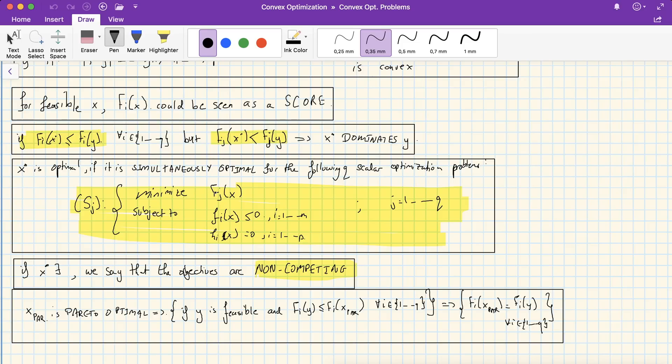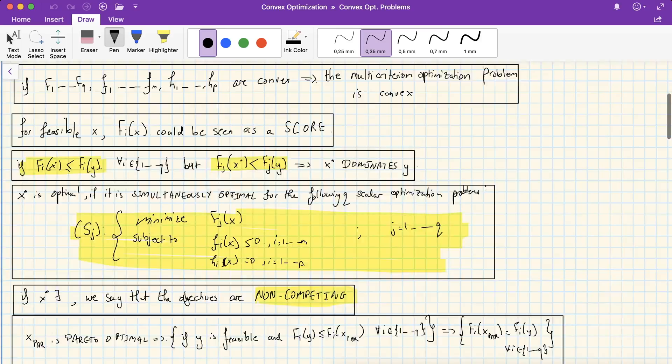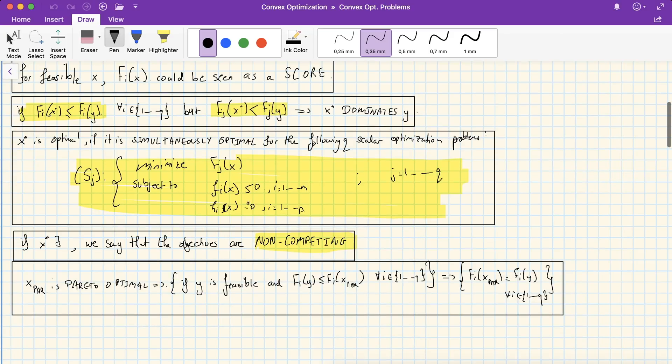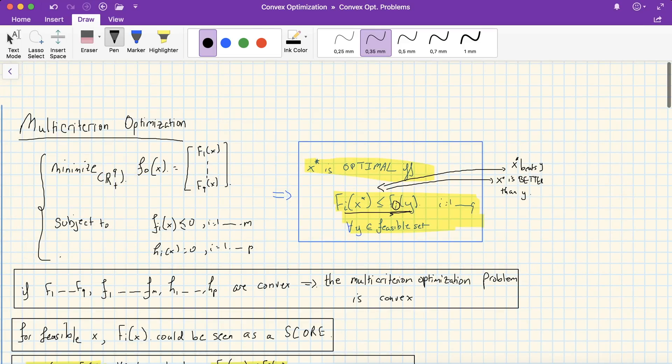That is, if we form q optimization problems, each containing the scalar cost, the jth entry of F of x as such, if x star is optimal for all q problems, then x star is optimal for the multi-criterion problem.